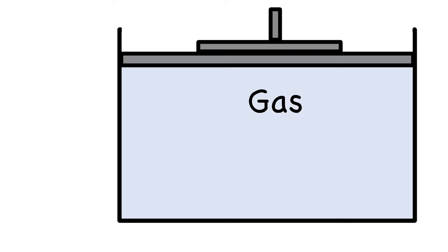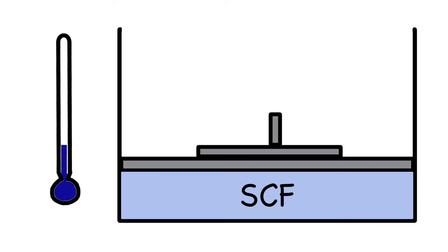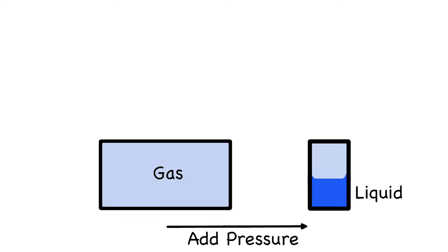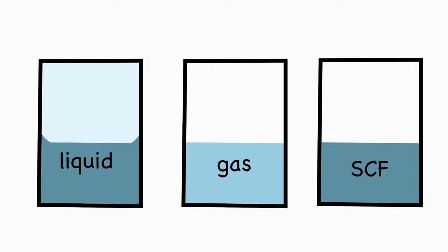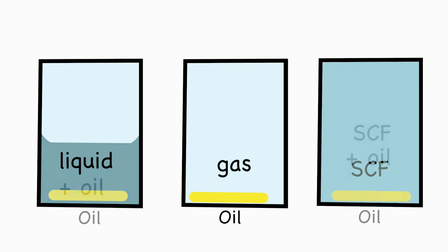After reading around for a while, I learnt that supercritical fluids, or SCFs for short, form under high pressure and high temperature. If we start with a gas and add pressure, we get liquid. If we add temperature, we still get gas. If we add both temperature and pressure, then we get SCF. SCFs fill the available space like a gas, but are dense and can dissolve things like a liquid.